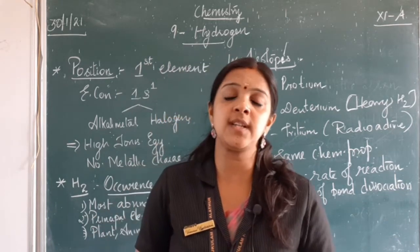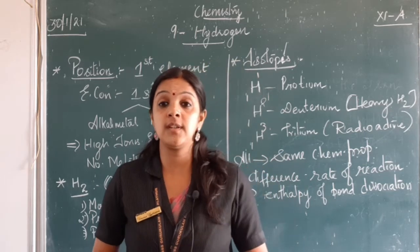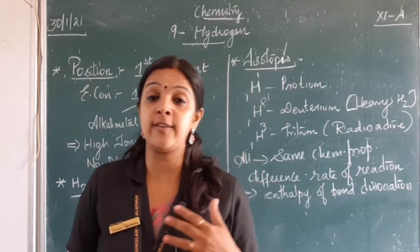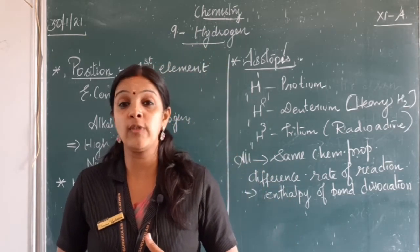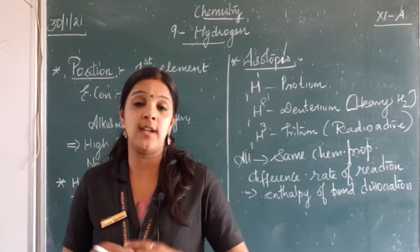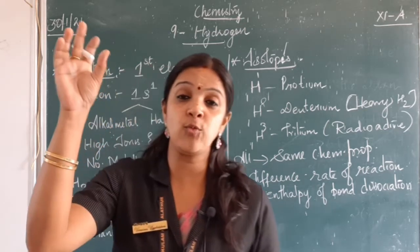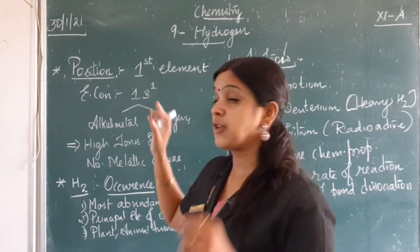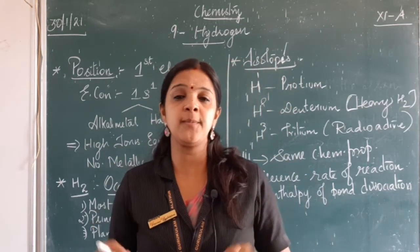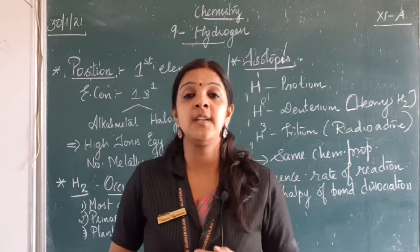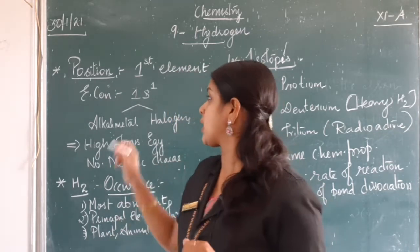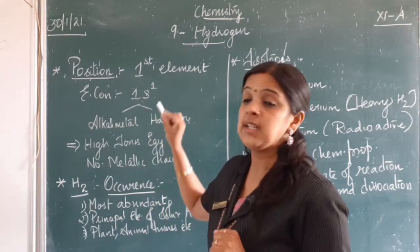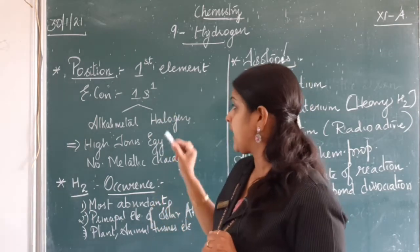Hydrogen is the most abundant element in nature. It is found in the combined state. It has one proton and one neutron, and it has a very small atom. It is placed at one end of the periodic table. When we see the position of hydrogen, it is the first element in the periodic table — hydrogen, helium, lithium — having atomic number 1. So the configuration is 1S1, belonging to the first shell in the S sub-shell, with one electron in the S sub-shell.